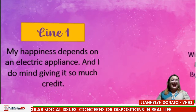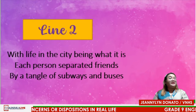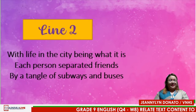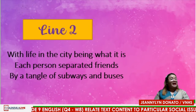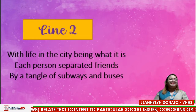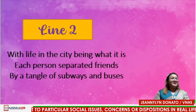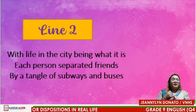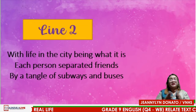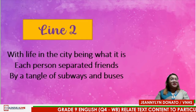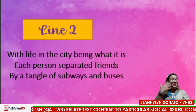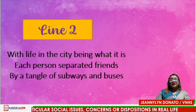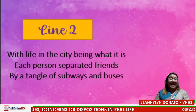How about this second line? 'With life in the city being what it is, each person separated from friends by a tangle of subways and buses.' My question is: why are friends disconnected based on this line? Friends become disconnected for many reasons — busy schedules, work, school, or because they belong to different places. But they will not be permanently disconnected because there's a telephone that can keep them connected, just through text or chatting in Messenger or Viber. Even video chatting through Zoom or Facebook — we can connect to them anytime, wherever we may be.